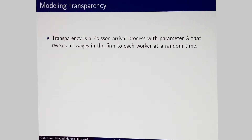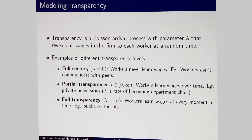Transparency is modeled as an arrival process that grants people information. The parameter of this arrival process is lambda. When this process hits a particular worker, they see all the wages of the firm — it's like HR drops in with the book of everyone's salary. Full secrecy is lambda equals zero: the arrival process never arrives and workers never learn anything. Full transparency is lambda equals infinity: every moment workers learn all wages, as in a public sector job where salaries are online. Partial transparency is something in between.